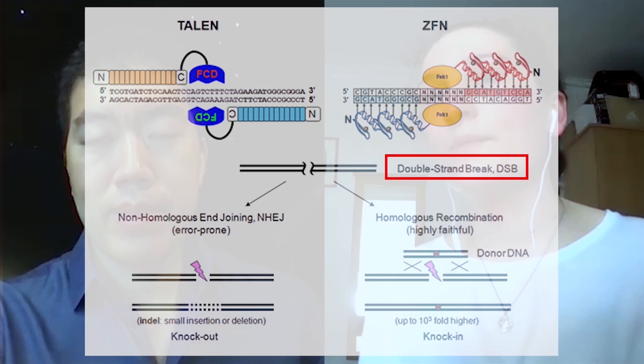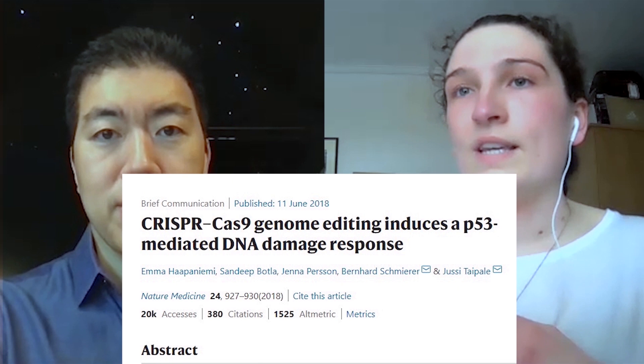With CRISPR-Cas9, the canonical system, in addition to zinc finger nucleases and TALENs, the way that they work is by inducing double-stranded breaks. Double-stranded breaks are quite deleterious for a cell — it's a major form of damage. It's raised concerns in different papers about inducing the DNA damage response in terms of the P53-mediated response.